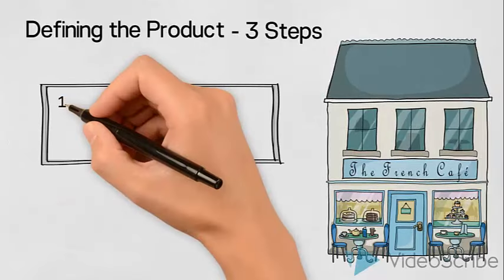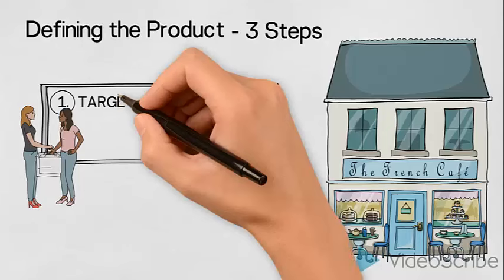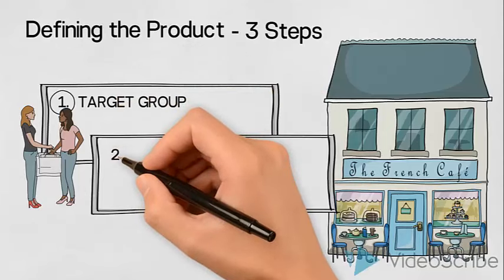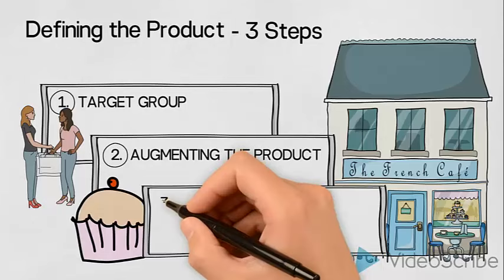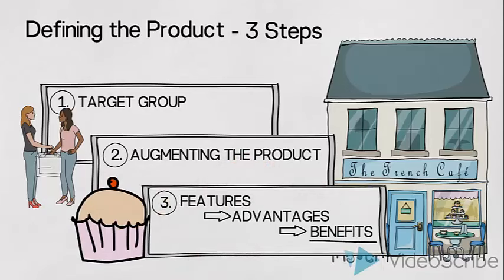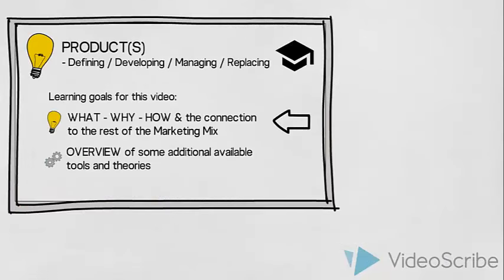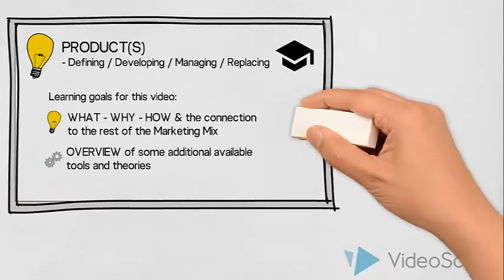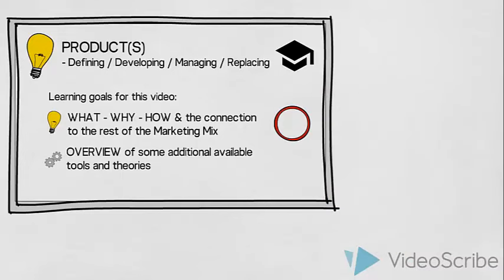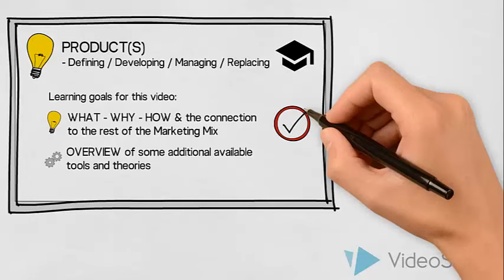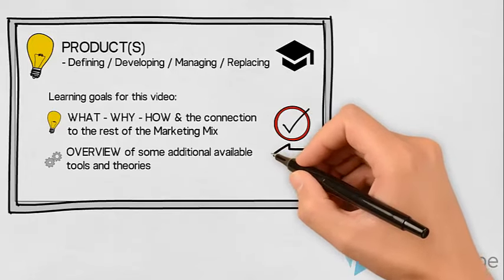So, to sum up, we should choose, investigate and understand our target group. We should define how we will augment the product. And we should understand the benefits that our product gives the target group. We have now established an understanding of what defining a product means, why we need to know about it and how we can go about doing it. So, let's move on.